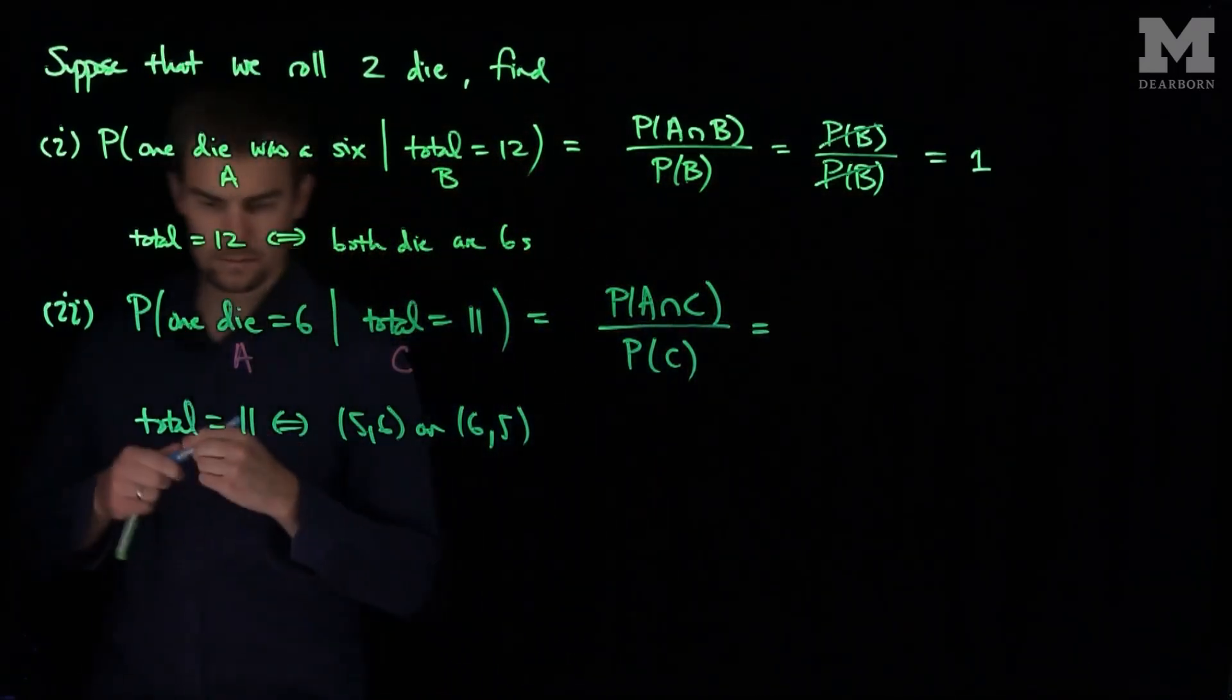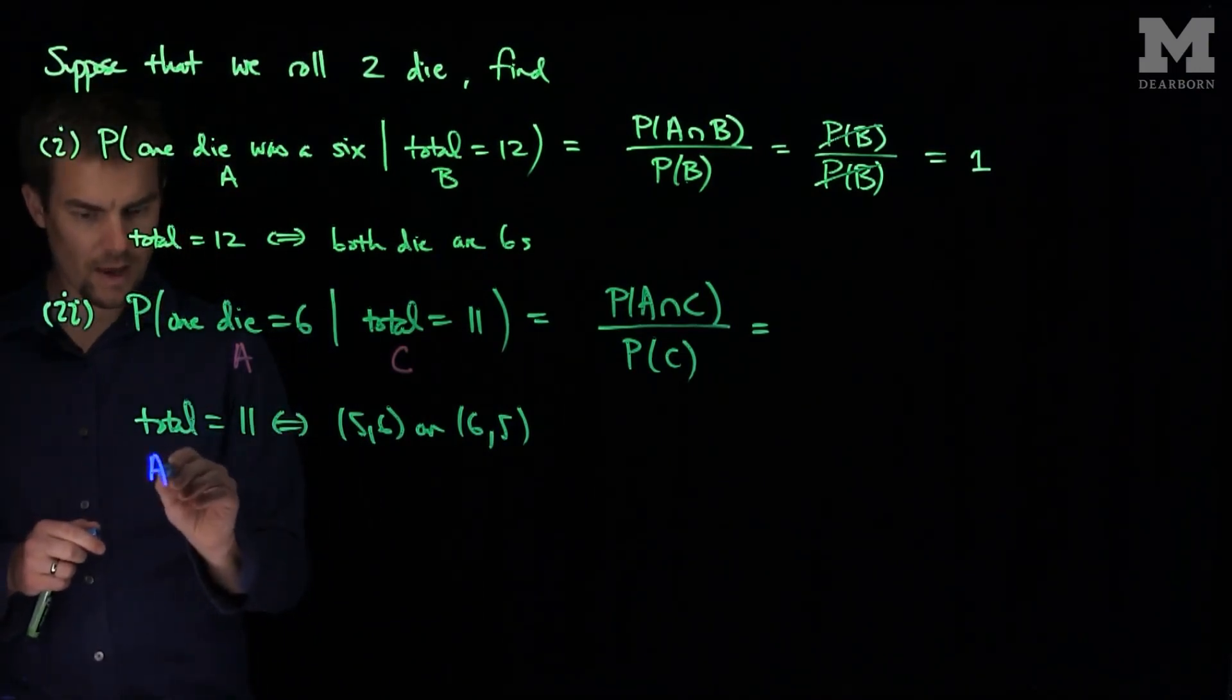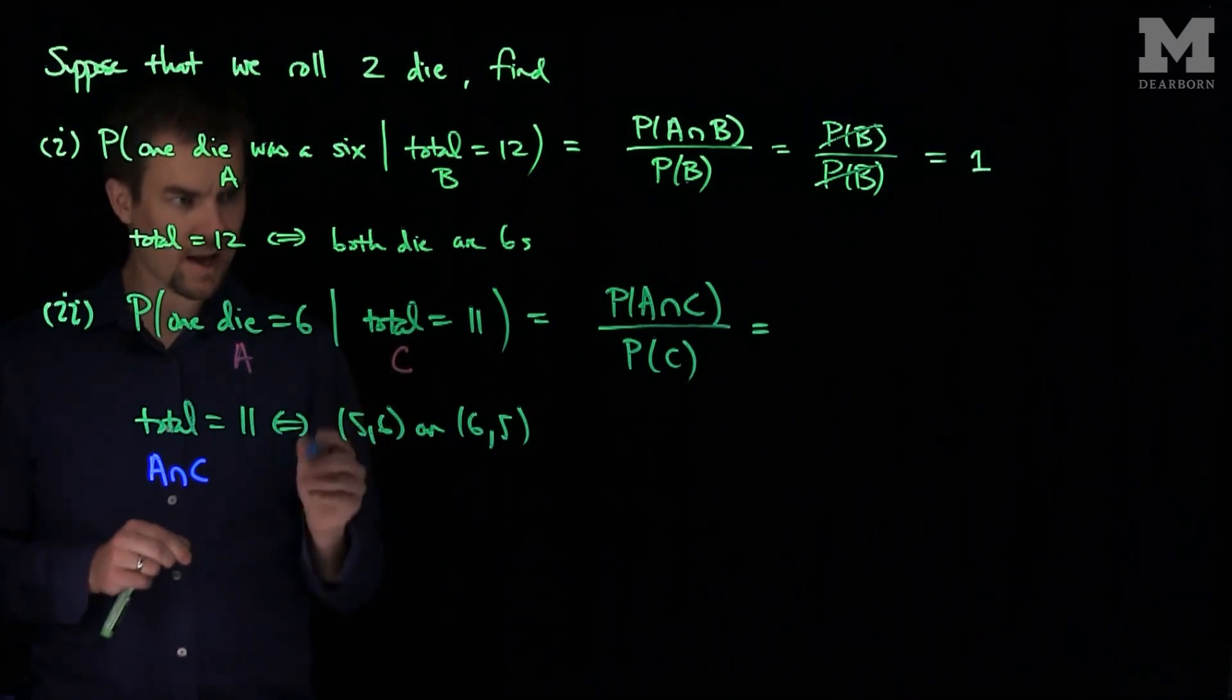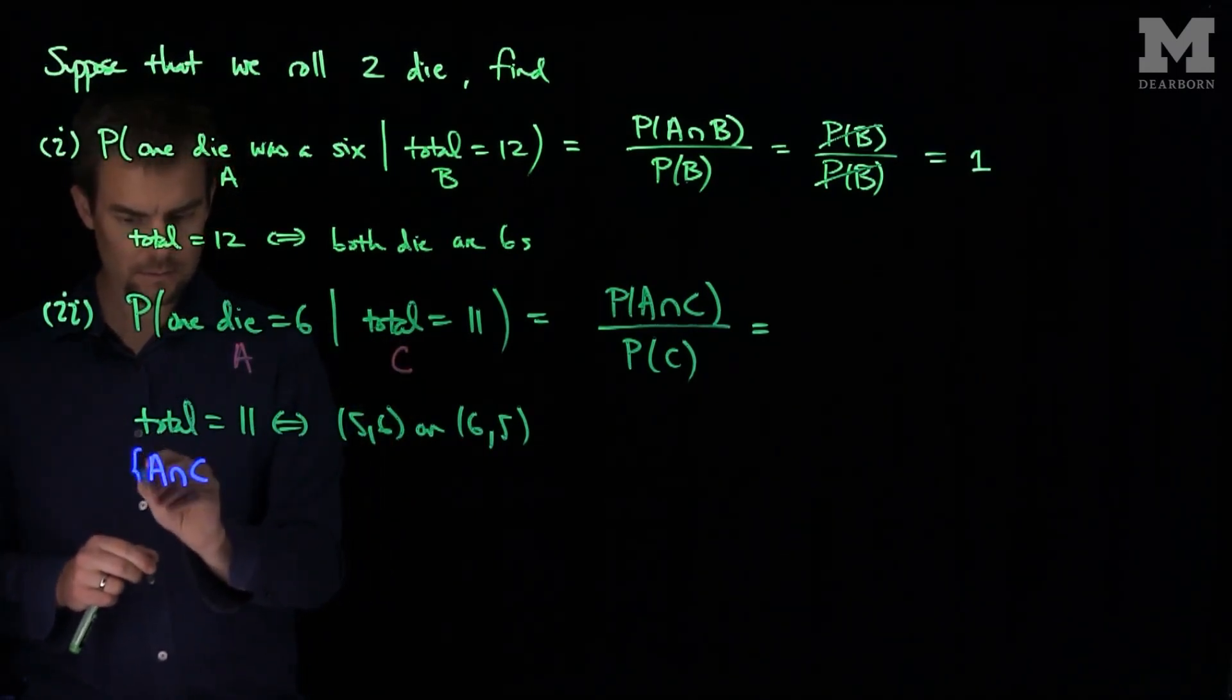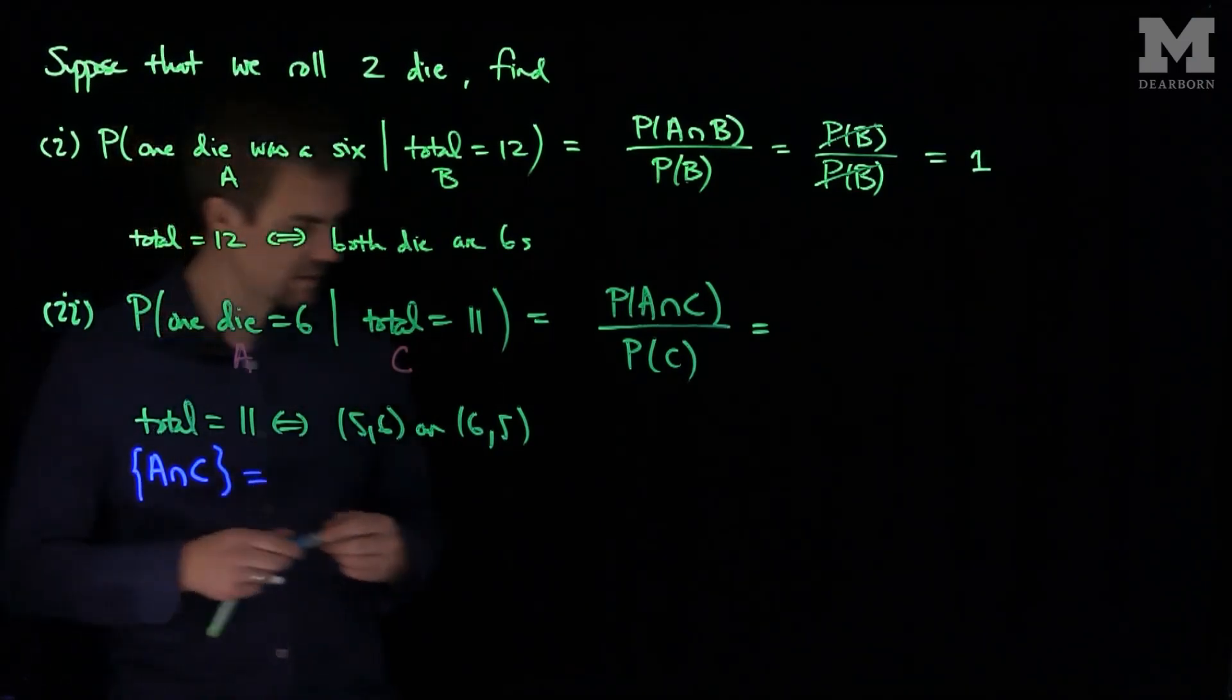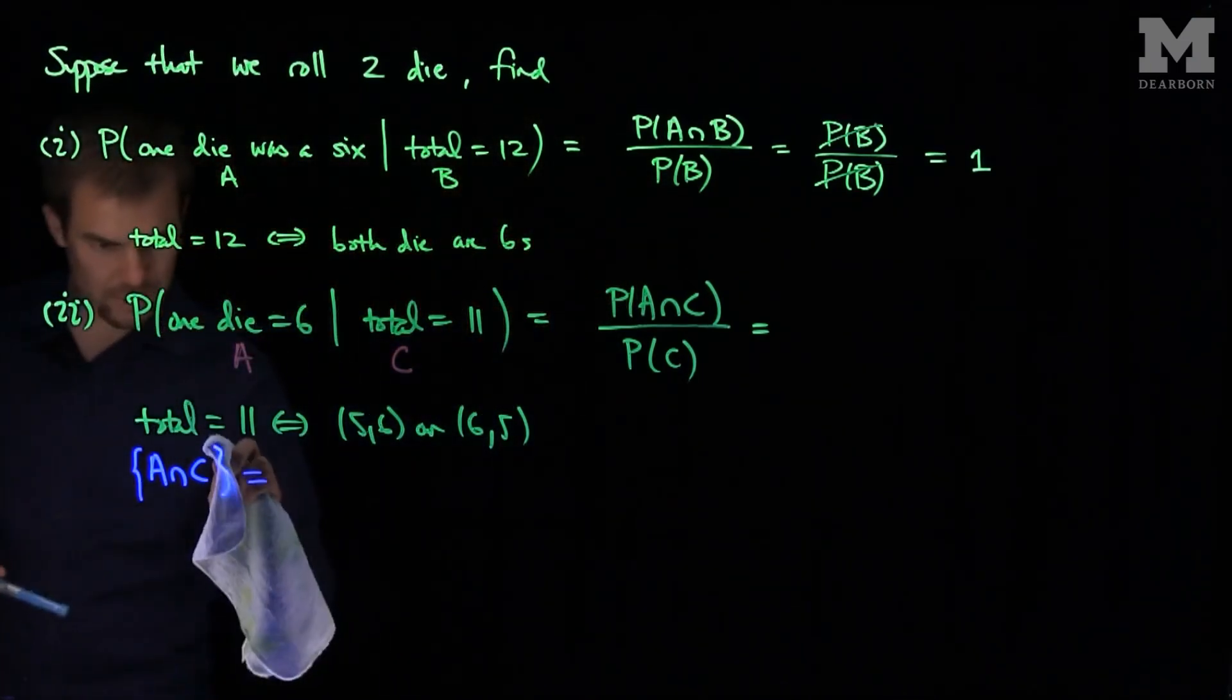So what will happen if we consider the event A intersect C, what we see is that this event over here is going to be this set of events. This is exactly what we don't know in parentheses over here.